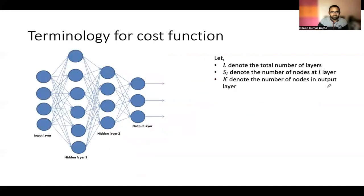Okay, let's move on. This is for representation purpose in order for the cost function to represent what we are doing is we're taking some notations. L denotes the total number of layers. So, this has total four layers. So, L will be four.